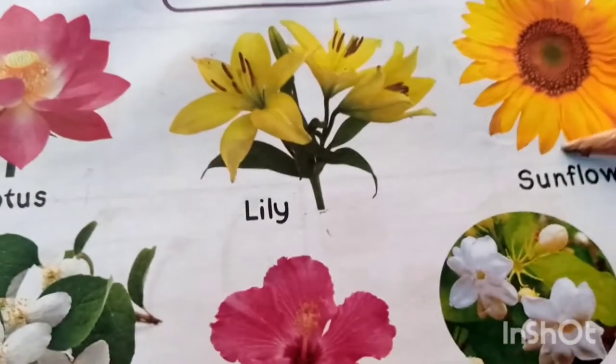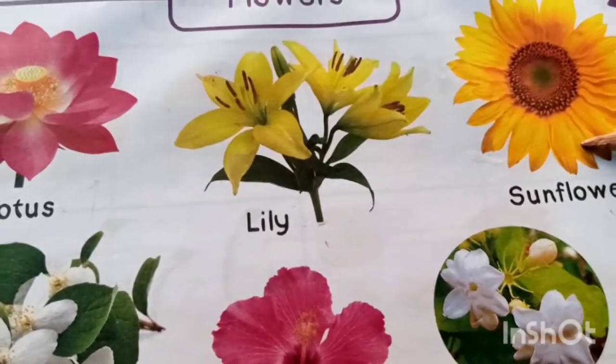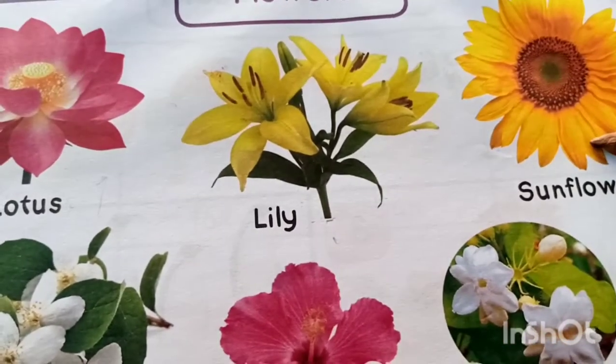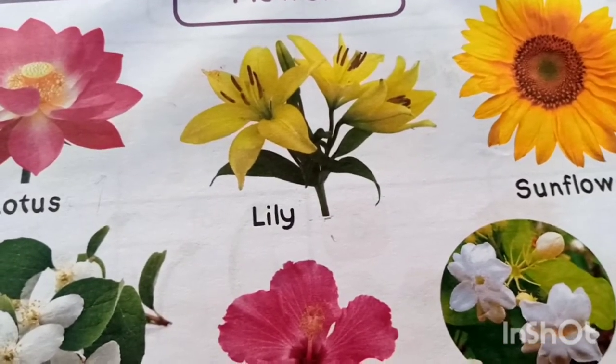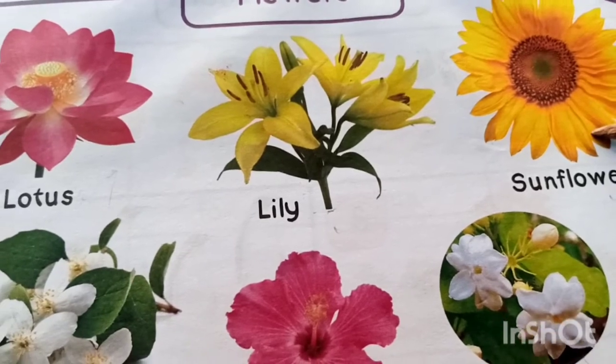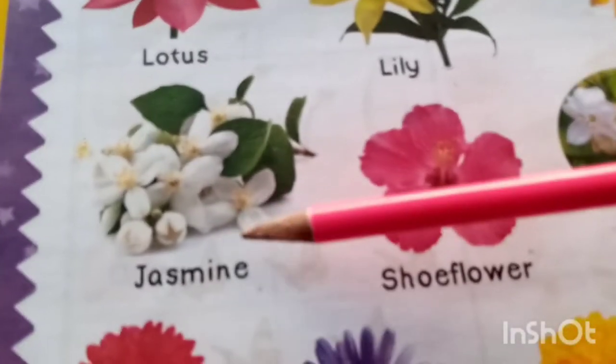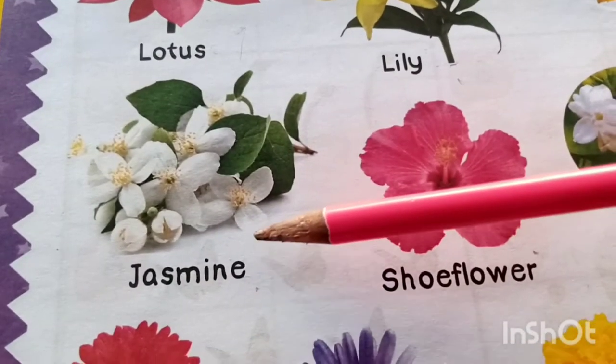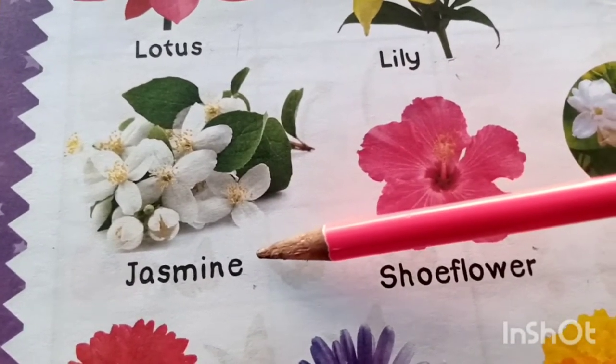What is this? This is sunflower. What is this? This is jasmine.